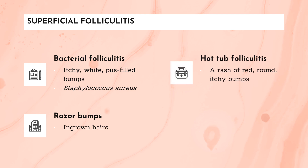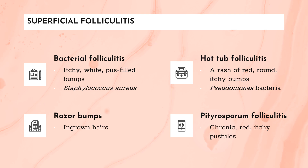The third type is hot tub folliculitis, where a rash of red, itchy bumps develops one to two days after exposure to bacteria. Unlike the previous types, the causative agent is Pseudomonas bacteria. The fourth is Pityrosporum folliculitis, which produces chronic red, itchy pustules on the back and chest, and sometimes on the neck, shoulders, arms, and face.